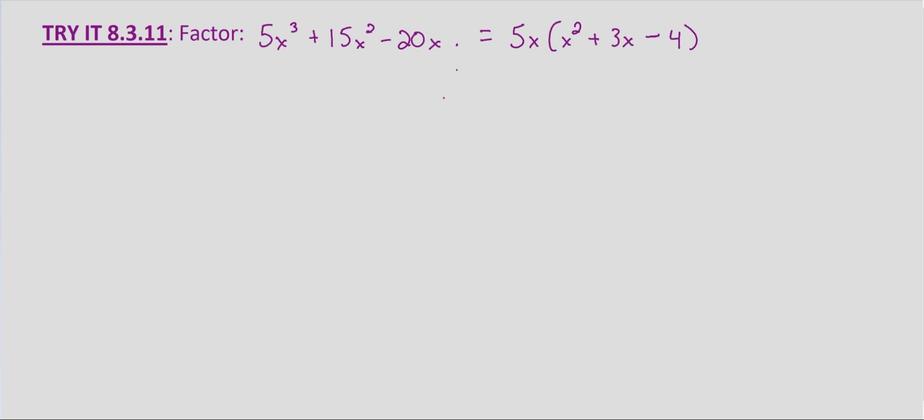And now we want to know what numbers multiply to negative 4 and add to 3. So we'll look at the factors of negative 4. So we're looking at plus and minus. So we'll start with 1 times negative 4, 2 times negative 2. And that's the only combinations that we can have with this first part being positive. So we'll look at the negatives now.